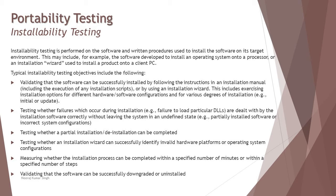Installability also covers validating that software can be successfully downgraded or uninstalled. It's not limited to installing a new product — it also deals with repairing it if a file is deleted or corrupted. We also check whether prerequisites are available and how many steps are required to install. Additionally, can a user successfully uninstall the software when they no longer want it? Malware, for instance, is designed so that you cannot uninstall it — every time you restart, it's still there.